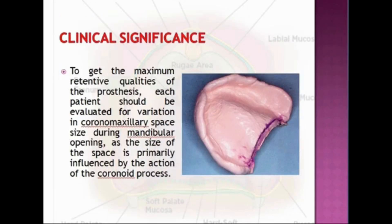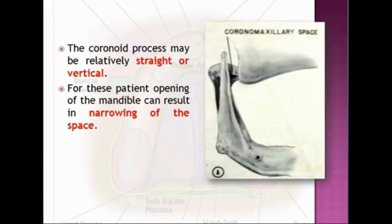To get maximum retentive qualities, each patient should be evaluated for variation in coronomaxillary space size during mandibular opening, as the size of the space is primarily influenced by the action of the coronoid process. The coronoid process may be relatively straight or vertical; for these patients, opening of the mandible can result in narrowing of the space, which can be assessed in the diagram.